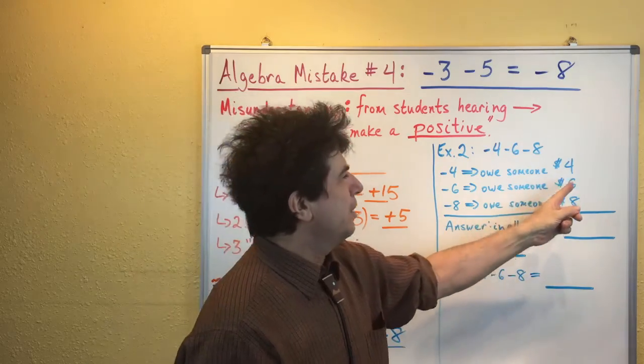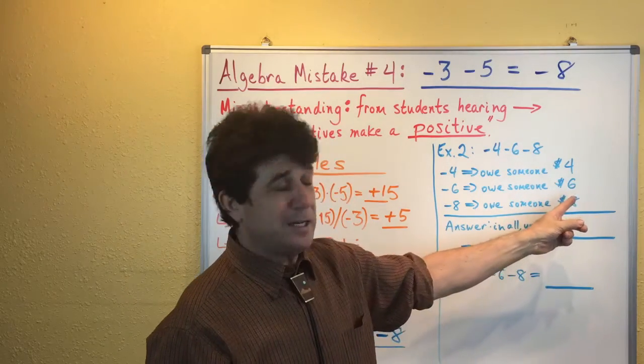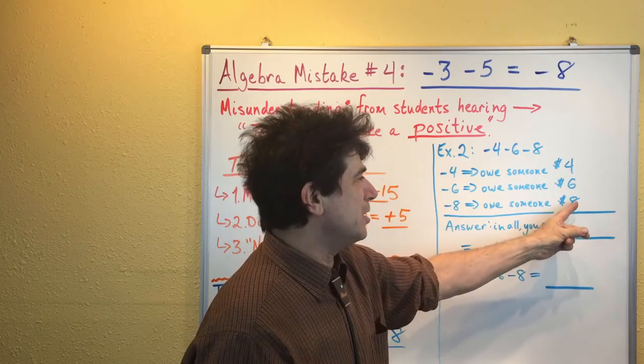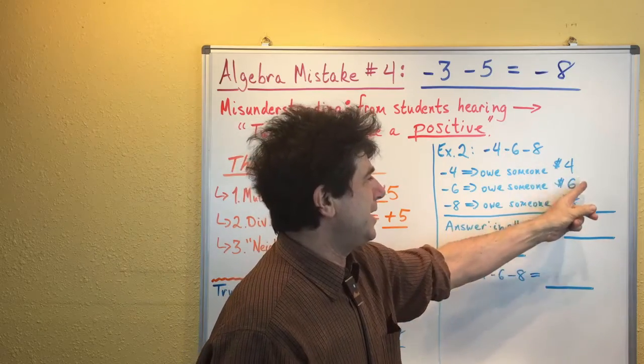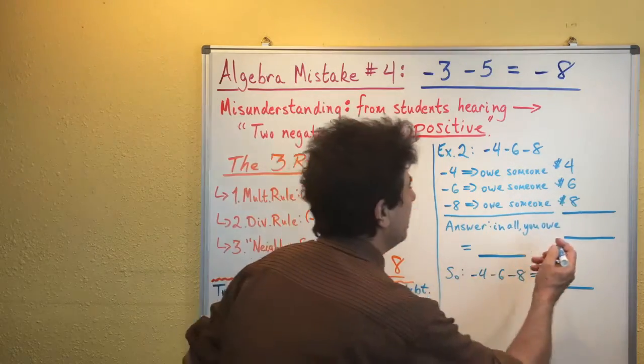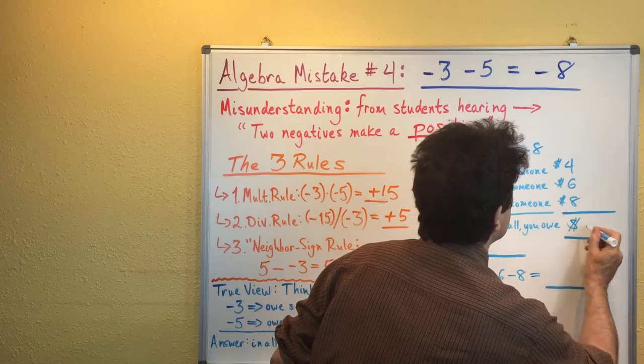Let's add this up. Four and six, that would mean we owe ten dollars right there. When we add on the eight that we also owe, now instead of just owing ten, we owe eighteen. So all together, we owe eighteen dollars.